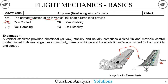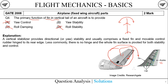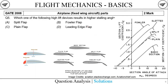Fixed surfaces that do not move are required for stability, not control, so options discussing control can be eliminated. The vertical tail deals with the yaw motion of the aircraft - from the top view, yaw is what the vertical tail handles. Any option discussing roll can be struck out. We are left with yaw stability: the fin provides yaw stability and is also called the vertical stabilizer. Option B is confirmed correct.